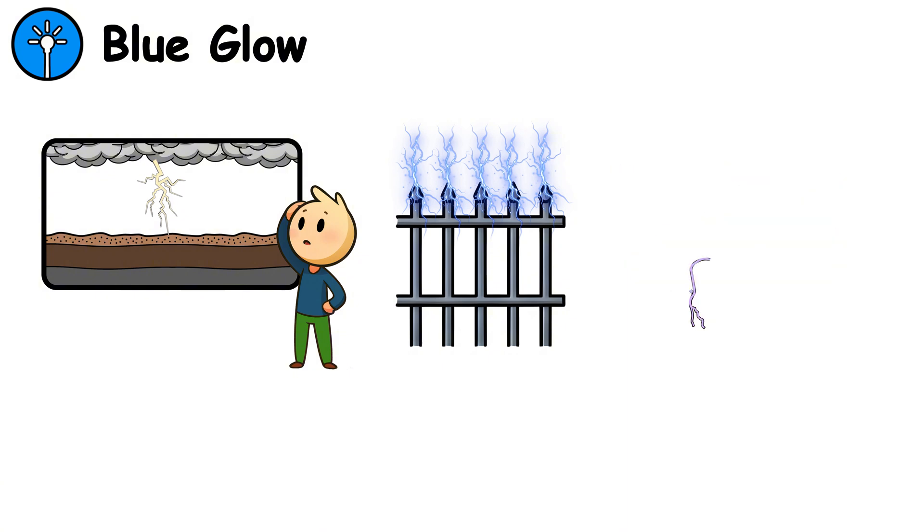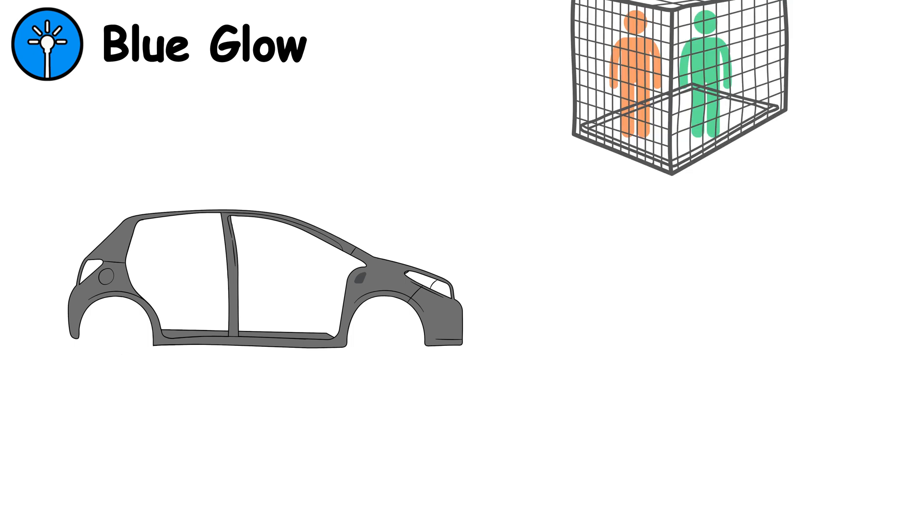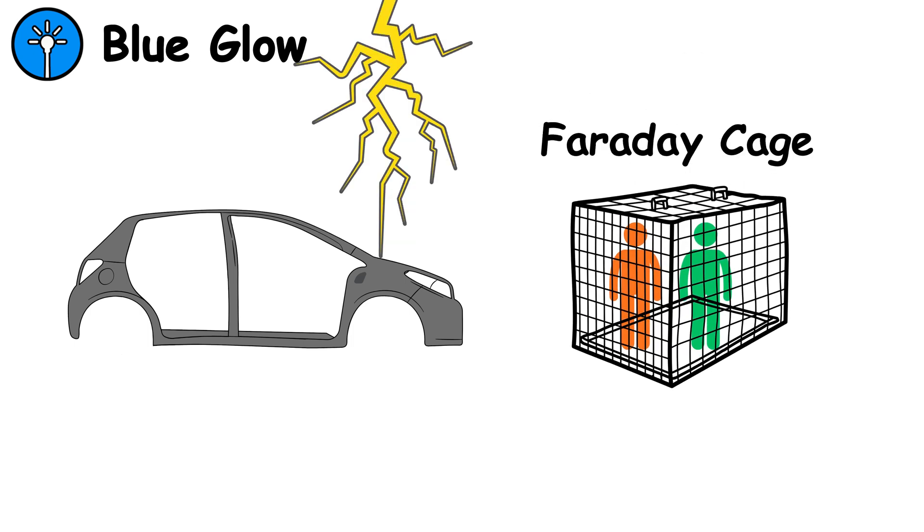Move indoors or to a closed vehicle immediately. The metal frame of a car acts like a Faraday cage, guiding the electrical current around the outside instead of through the people inside.